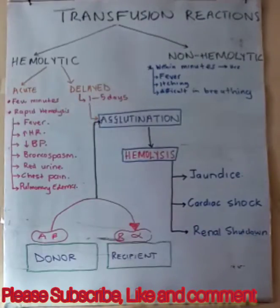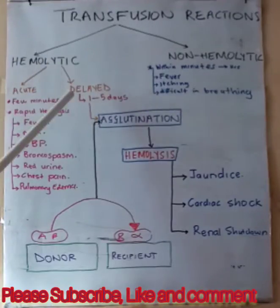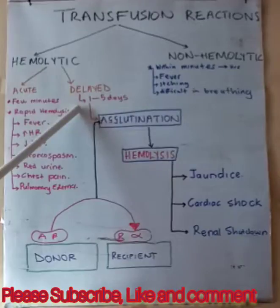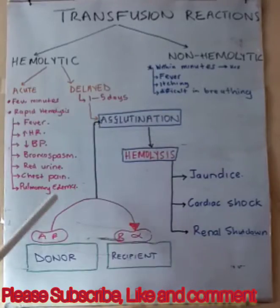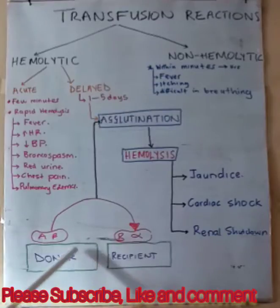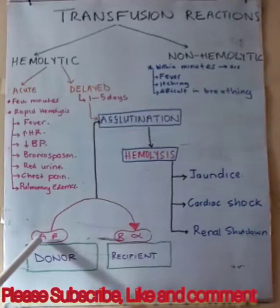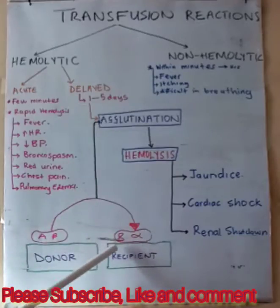For delayed hemolytic reaction, this happens from one to five days after transfusion. Here we have our recipient — our patient — and the donor. In this example, the donor has blood group A donating to a patient with blood group B.